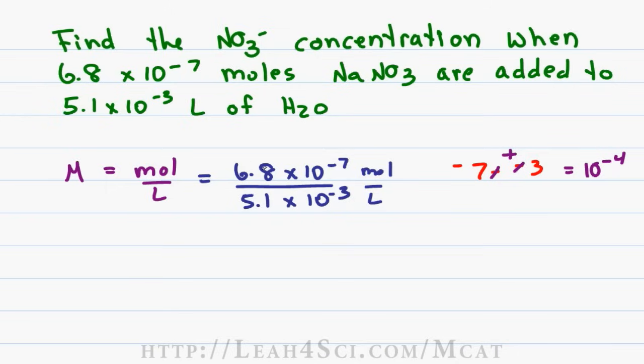The numbers themselves: 6.8 is approximately 7, 5.1 is approximately 5, so we have 7 over 5 times 10 to the minus 4. This is not an appropriate answer, and in the next video I'll break down fractions and ratios in more detail, but for now look at it this way.